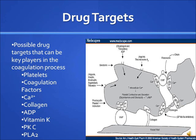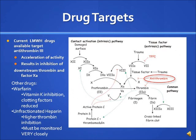The possible drug targets for thrombosis include, but are not limited to, the following key players in the coagulation process. Current low molecular weight heparin drugs target antithrombin 3, accelerating its activity and resulting in inhibition of downstream thrombin and factor 10a. Other drugs that prevent blood clotting include warfarin, which is a vitamin K inhibitor reducing the activity of clotting factors, and unfractionated heparin, which has higher thrombin inhibition and must be monitored very closely.